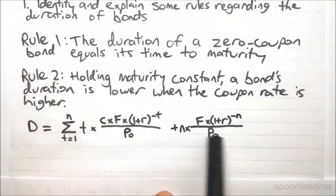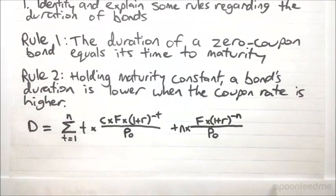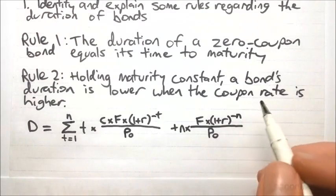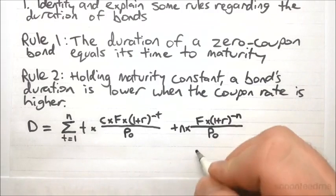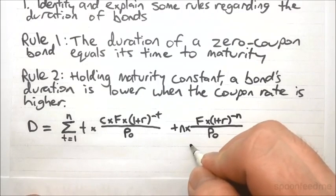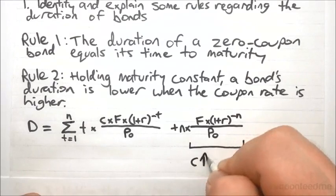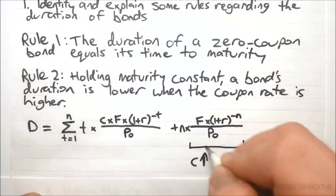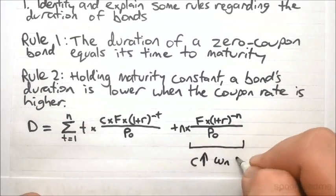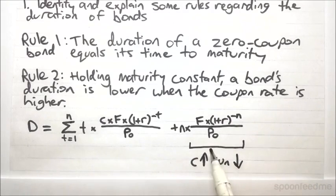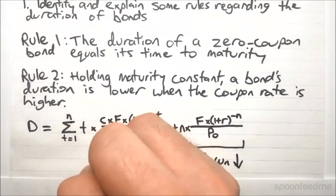And we want to have a look at this part over here. Take note of the fact that when the coupon rate is higher, the price of the bond is also going to be higher. So what happens over here is, when the coupon rate goes up, this weighting attached to the n goes down. And remember, the whole thing is just this weighted sum, or weighted average, and we know that all of the weights add up to one. So if this weight goes down, then we know that these weights...